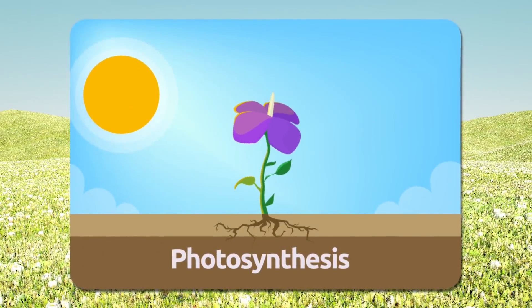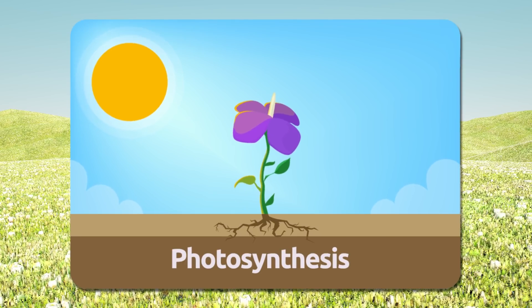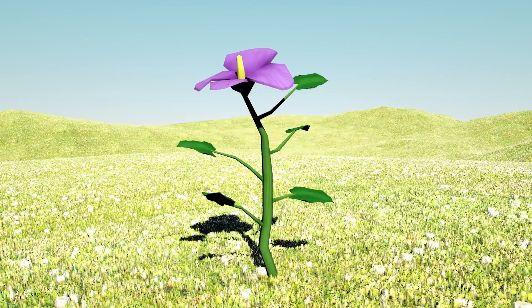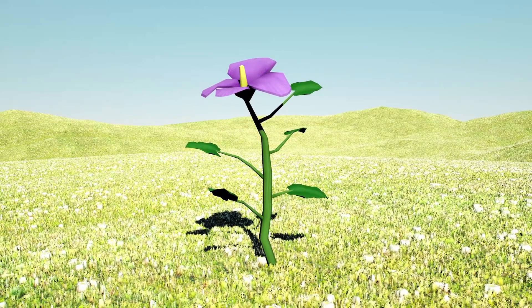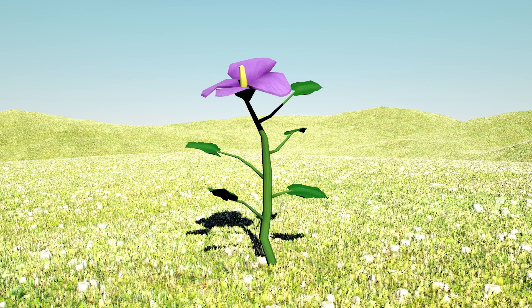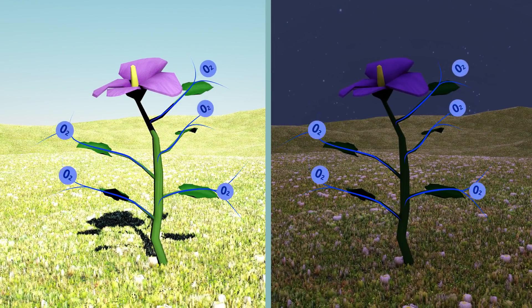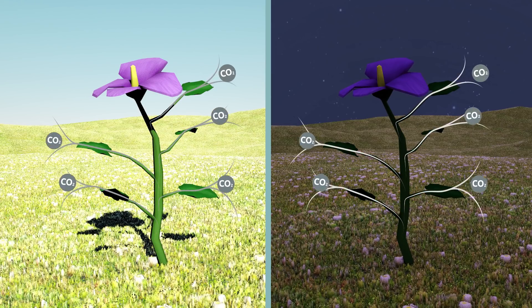Keep in mind that photosynthesis happens only during the day because plants need the sunlight. Don't confuse respiration with photosynthesis. Plants breathe during day and night. They absorb oxygen and release carbon dioxide.